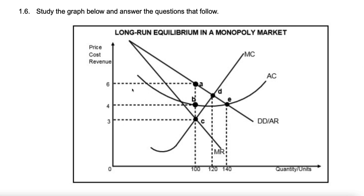How do we know the price is 6? Because at 100 units, it touches the demand curve at A, and that's the price. The average cost at 100 units is 4 rand per unit. So this firm is making an economic profit of 2 rand per unit. 2 times 100 — that's 200.